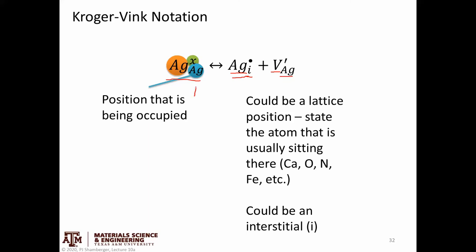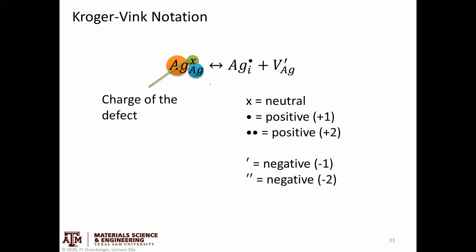The position subscript could be a lattice position — a site in the lattice or unit cell where an atom is usually occupying it, such as calcium, oxygen, nitrogen, or iron. Or it could be an interstitial, which is another site in the unit cell where there isn't anything initially. Finally, in the superscript, we note the charge of the defect.